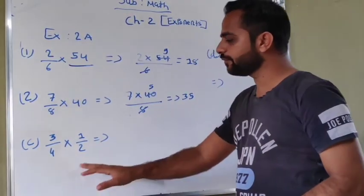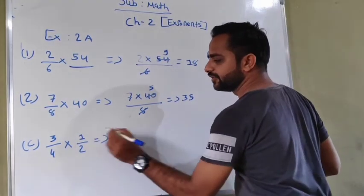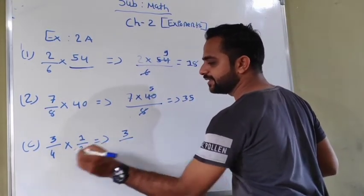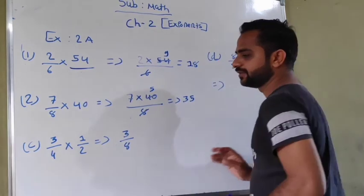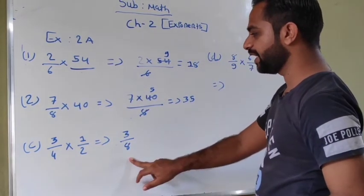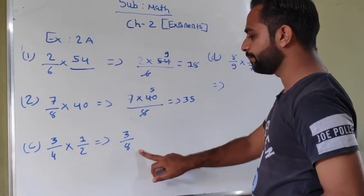Next one is 3 upon 4 multiply by 1 upon 2. So 3 times 1 is 3, 4 times 2 is 8. The answer will be 3 upon 8.